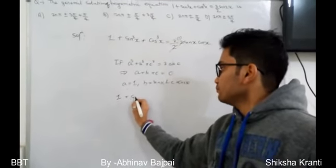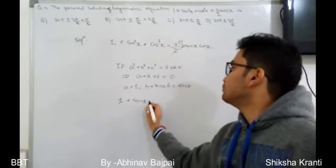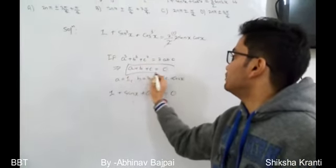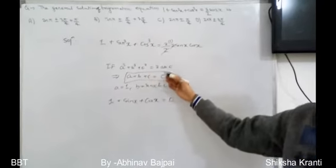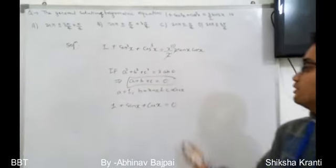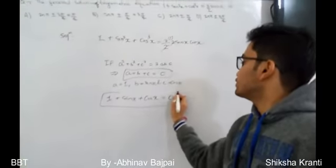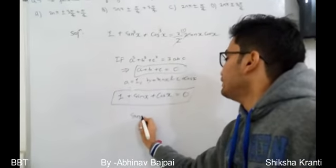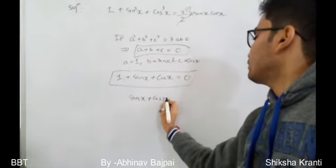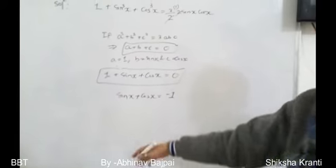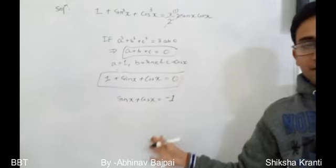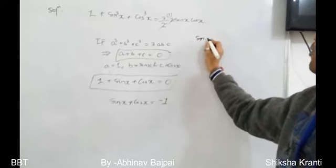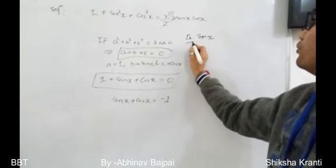Since 1³ + sin³x + cos³x = 3·1·sin x·cos x, by the algebraic identity we directly get 1 + sin x + cos x = 0. So sin x + cos x = -1. We now reduce this to a single cosine term by multiplying and dividing by √2.